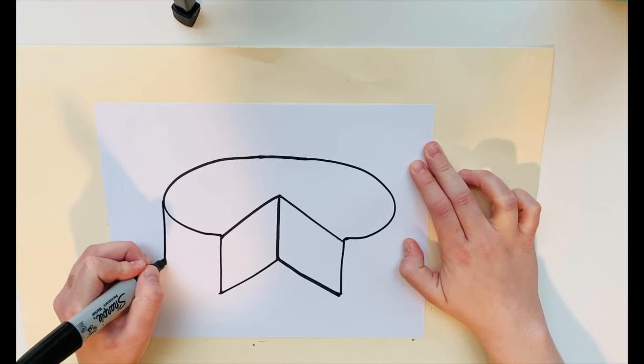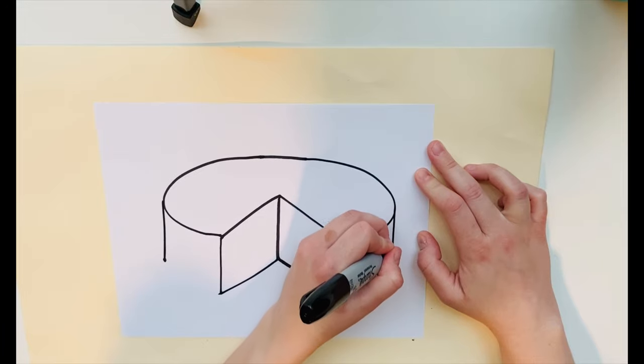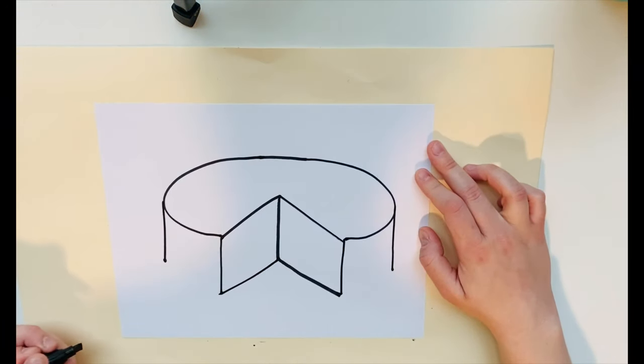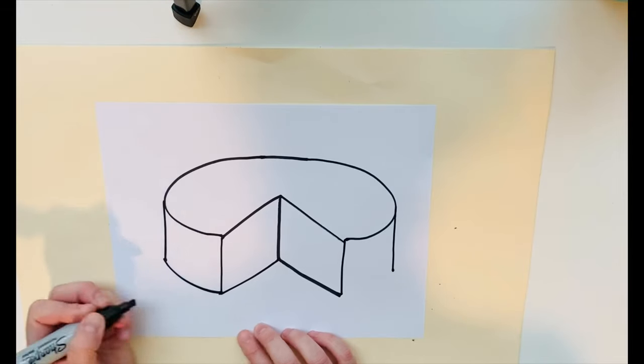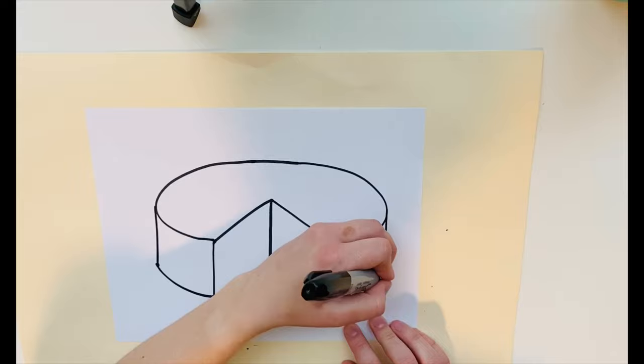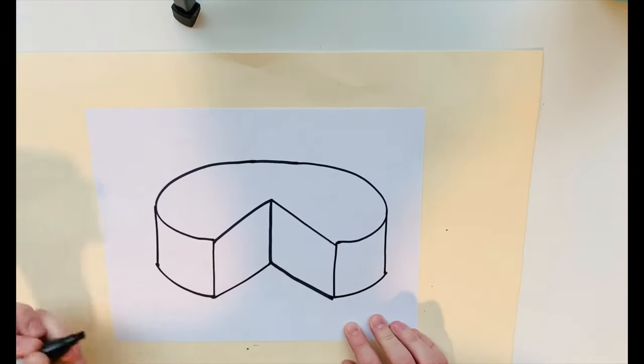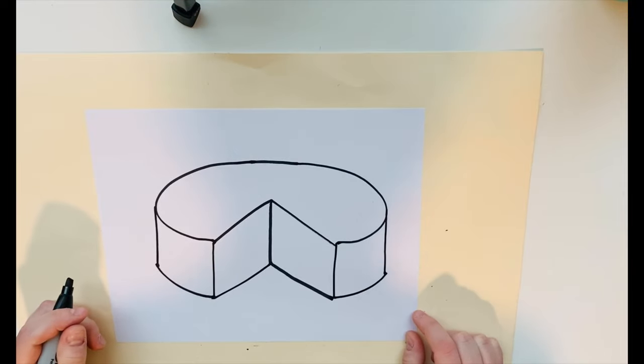Then two short lines that go down on the sides. And then I'm going to connect them with a curved line. Curved lines are the lines that show 3D form. You want your curves to match on top and bottom.